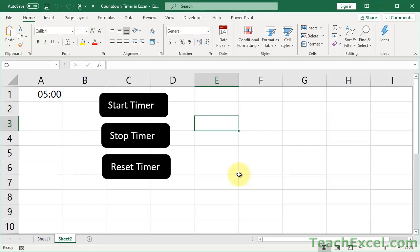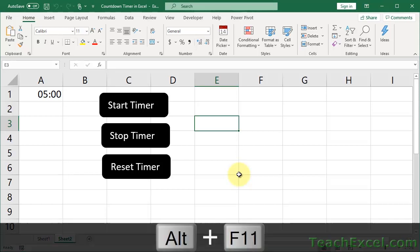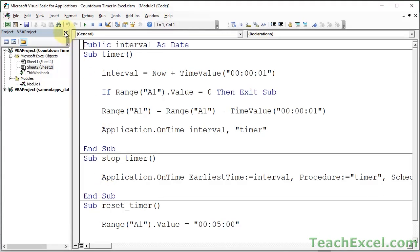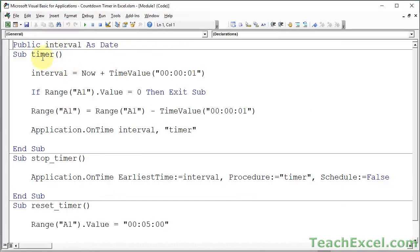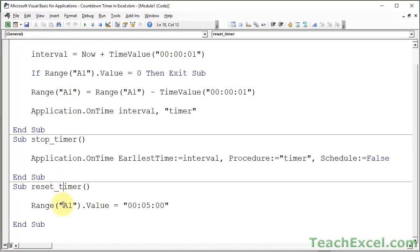But now let's cover the macros and I'll show you how this works, which will also help you to change this and adjust it for your situation. So hit Alt-F11 on the keyboard to go to the VBA window. Let's go ahead and close this. We have a Timer Macro, Stop Timer Macro, and a Reset Timer Macro.